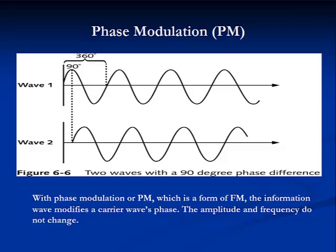With phase modulation, or PM, which is primarily a form of FM, the information wave modifies a carrier wave's phase. The amplitude and frequency do not change. PM is used to transmit color information in TV signals and other specialized functions. PM equipment is also less expensive than FM equipment.